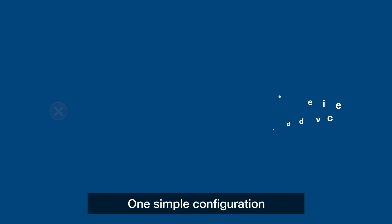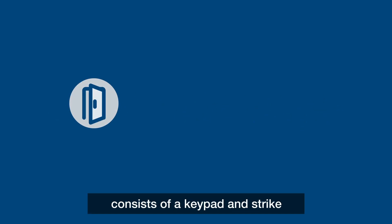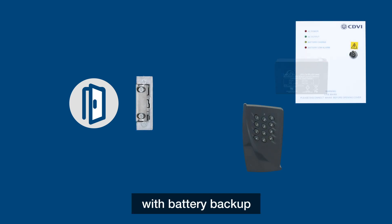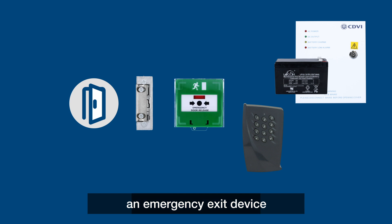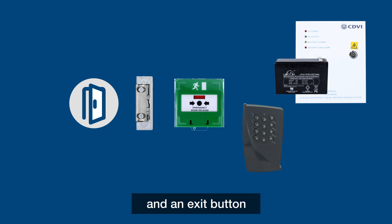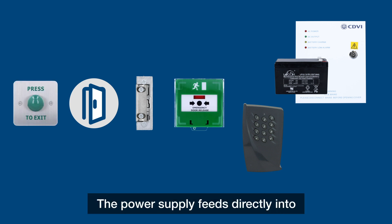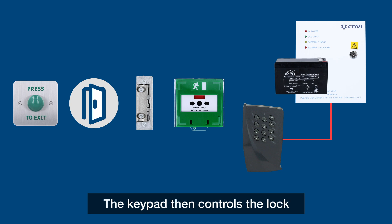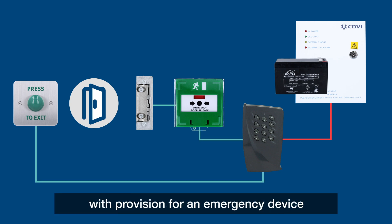One simple configuration of a standalone system consists of a keypad and strike powered by a power supply with battery backup, an emergency exit device, and an exit button. The power supply feeds directly into the keypad and the lock. The keypad then controls the lock through a relay with provision for an emergency device.